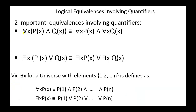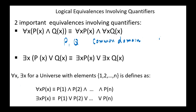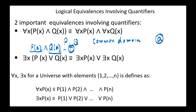To prove the first equivalence, we have to show that these two statements are equivalent. If the first is true, then the second should be true, and vice versa. Suppose that the predicates P and Q have a common domain. This means that if A is in the domain, then P(A) conjunction Q(A) is true. Since we have a conjunction, this implies that both P(A) and Q(A) are true. Because P(A) and Q(A) are true for every element in the domain, we can conclude that for all x, P(x), and for all x, Q(x) are both true, which means that the second statement is also true.